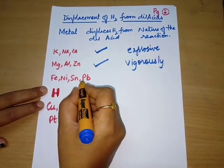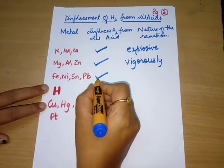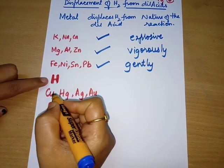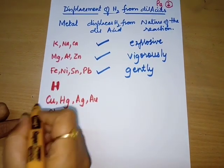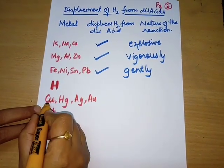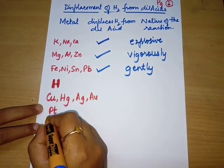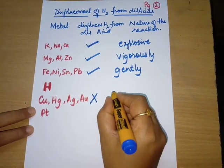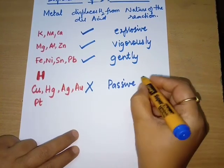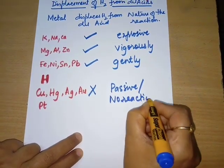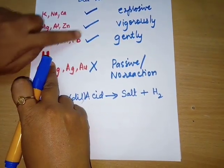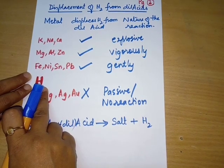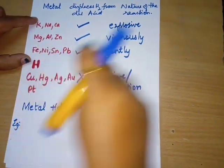Iron, nickel, tin, and lead displace hydrogen from dilute acids very gently. Metals below hydrogen in the activity series — like copper, mercury, silver, gold, and platinum — cannot displace hydrogen from dilute acids; they are passive towards dilute acid, meaning there is no reaction.